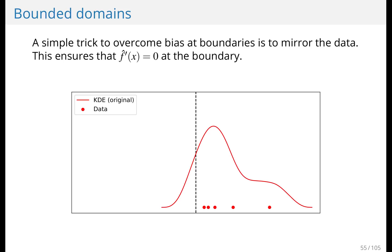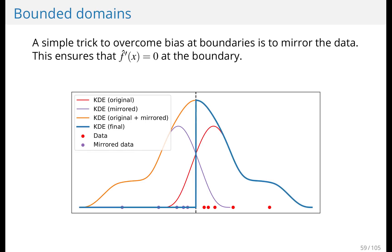What you do is you mirror the data about the boundary like so. Then you compute a kernel density estimate on this new mirrored data. Then you sum your original and mirrored kernel density estimate. And then you chop this so that it's zero to the left of the boundary.